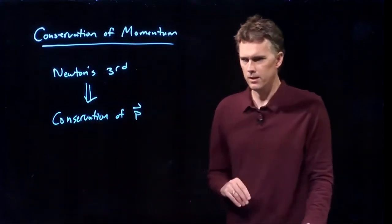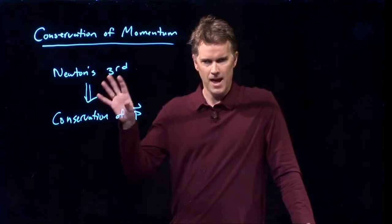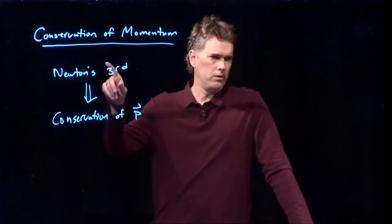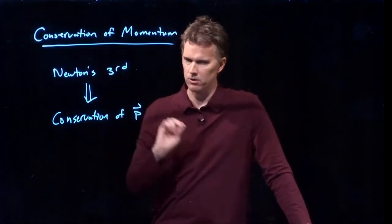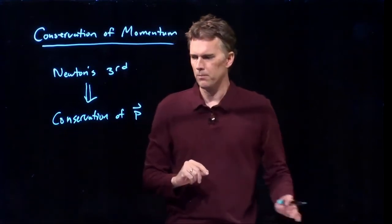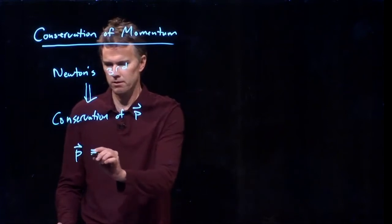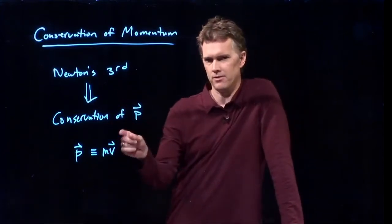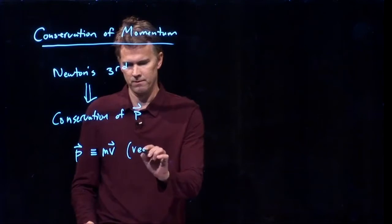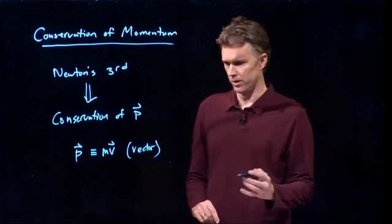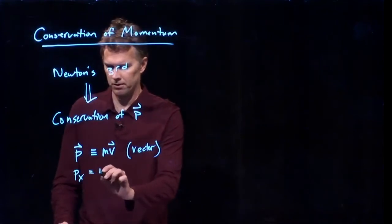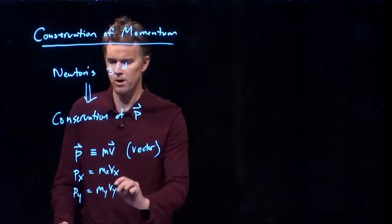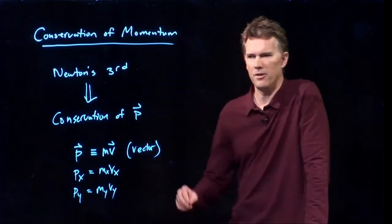Momentum we're writing with a P for some reason. We've run out of letters again. M got used up by mass, so momentum we're using P. It's a direct result from Newton's third law. Started Newton's third, you can get to conservation of momentum. But what do we mean by momentum? Well, momentum is mv. That's the definition of momentum. It's the mass times the velocity. It is a vector, which means it has components. P sub x is mv sub x. P sub y is mv sub y. It has vector components.